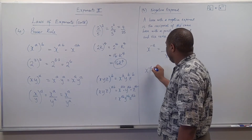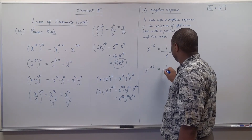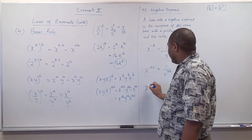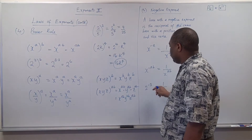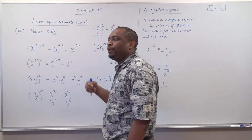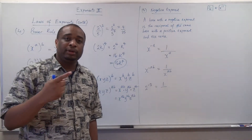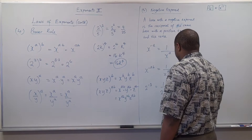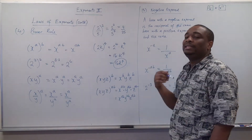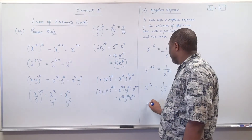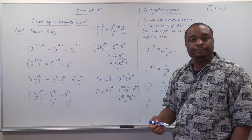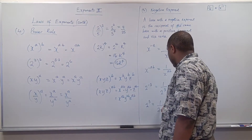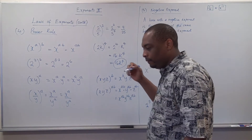For example, if we have x raised to power negative a·b, this is the reciprocal of x raised to power a·b. If we have 2 raised to power negative 3, that equals 1 over 2 raised to power 3, which is 1 over 8. And vice versa: 2 raised to the third power means 1 over 2 raised to power negative 3.